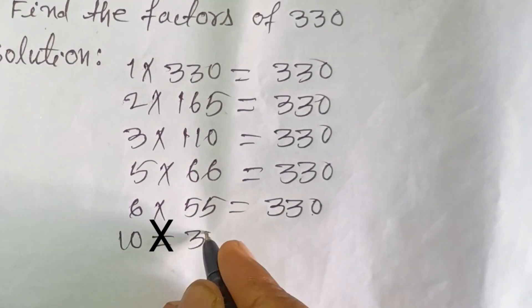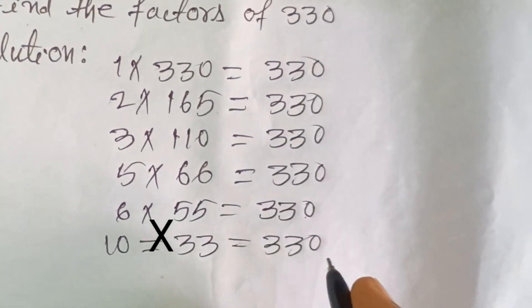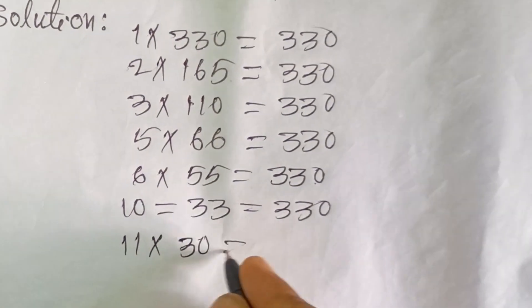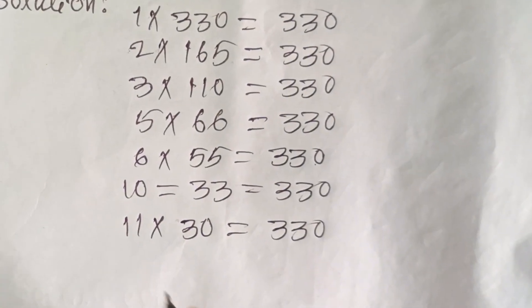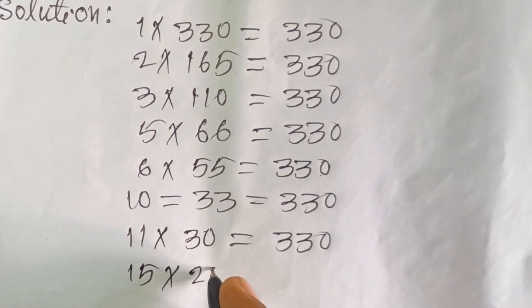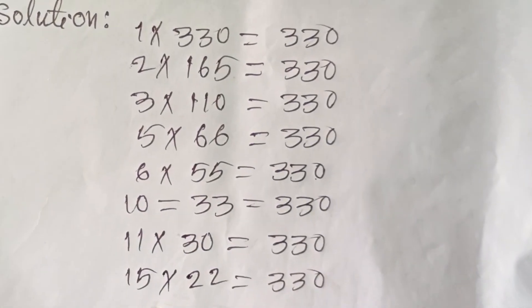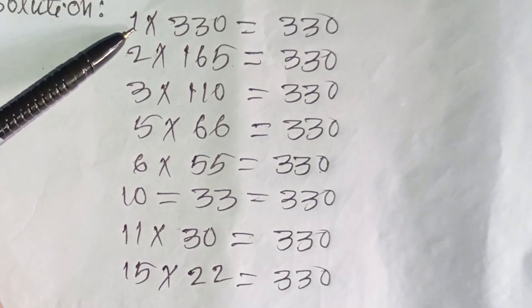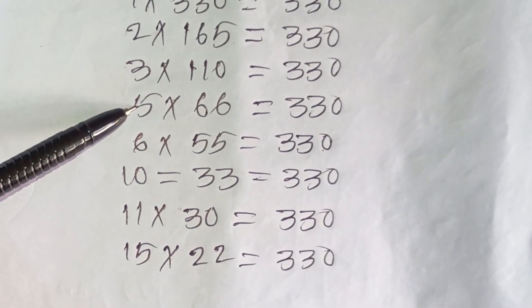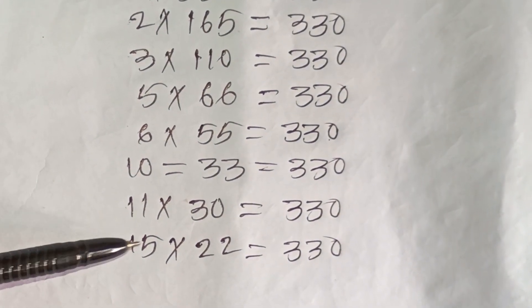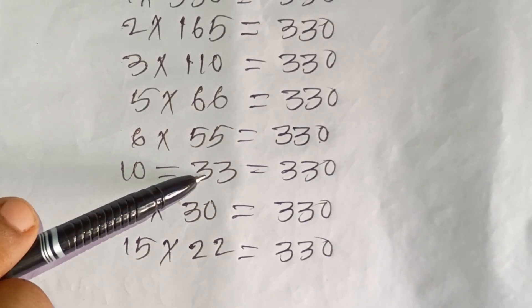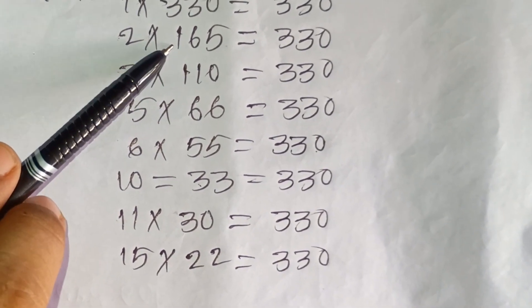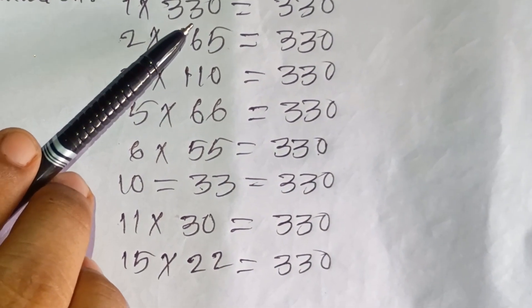10 × 33 = 330, 11 × 30 = 330. The factors of 330 are 1, 2, 3, 5, 6, 10, 11, 15, 22, 30, 33, 55, 66, 110, 165, and 330.